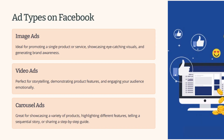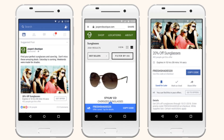Let's talk about ad types. The three we're covering today are: image ads, which are ideal for promoting single products and services with eye-catching visuals to generate brand awareness; video ads, great for storytelling, demonstrating product features, engaging your audience, and creating emotional impact; and carousels, which let you highlight different features, tell a sequential story, or use it as a step-by-step guide.